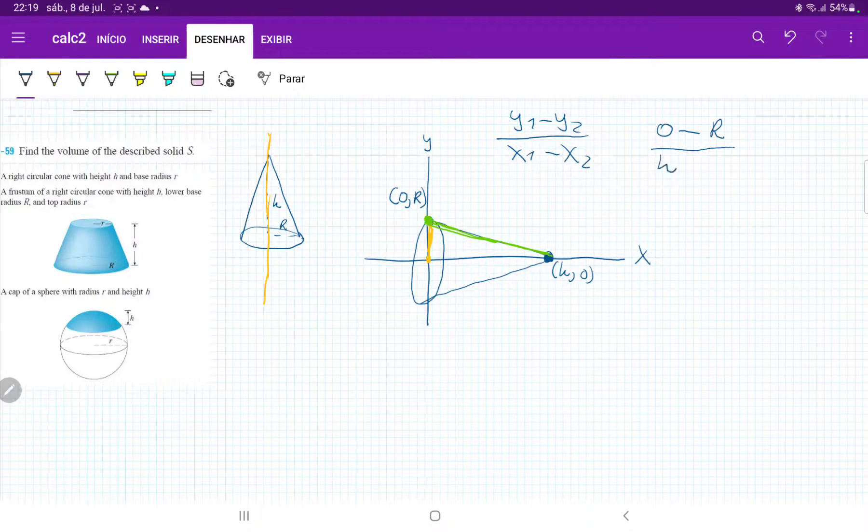and then h minus x2, which is 0 minus 0. So this slope is going to give us minus r over h.